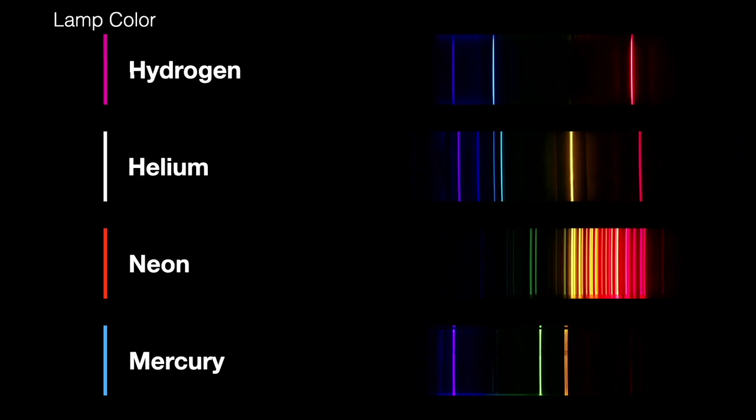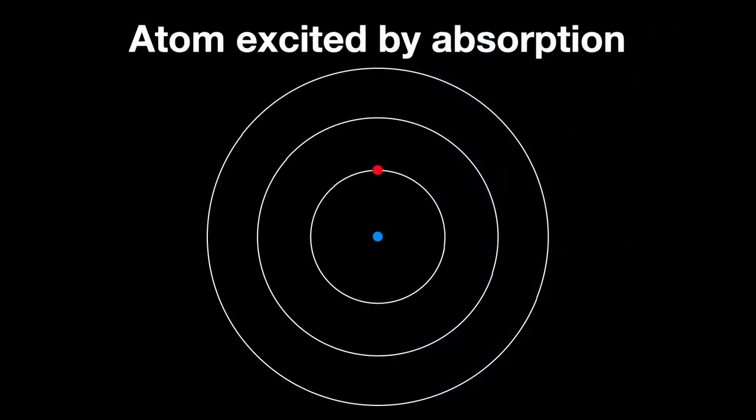Where do these colors come from and why are each atom's colors unique? This is a very simplistic model of the atom. The nucleus in the middle contains protons and neutrons and the electrons surround the nucleus in shells. The energy levels of these shells are determined by the laws of quantum mechanics.